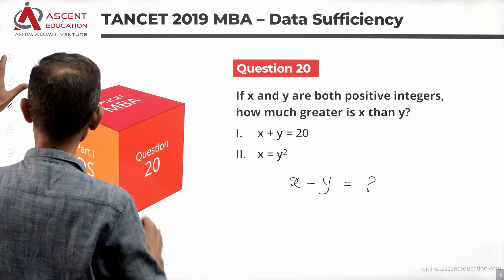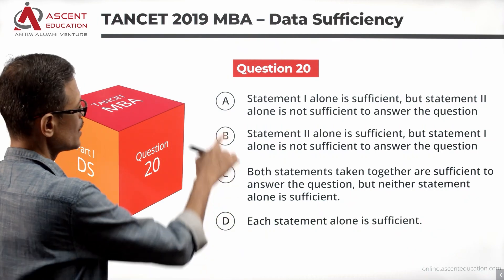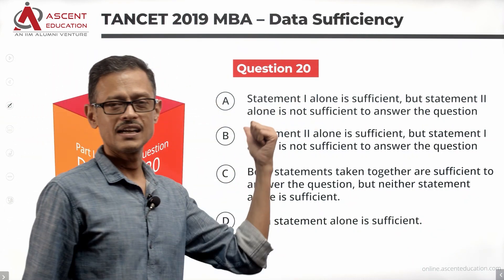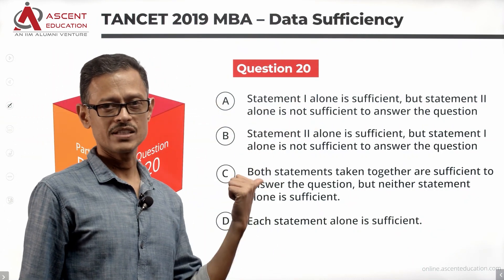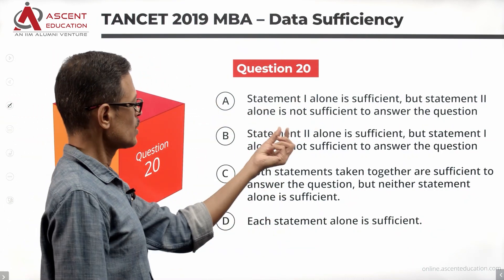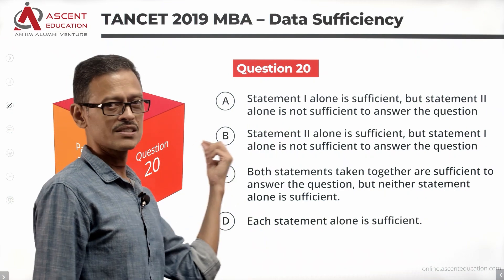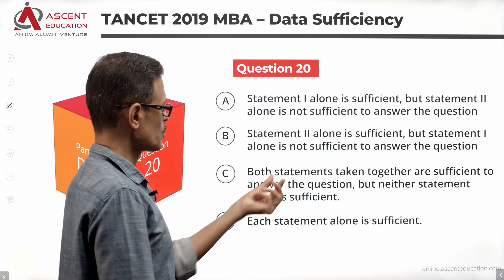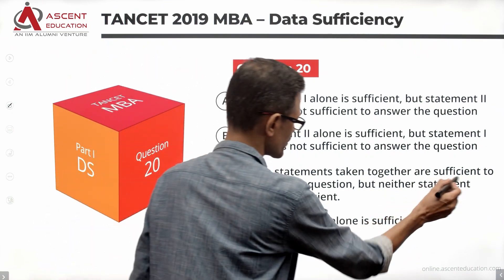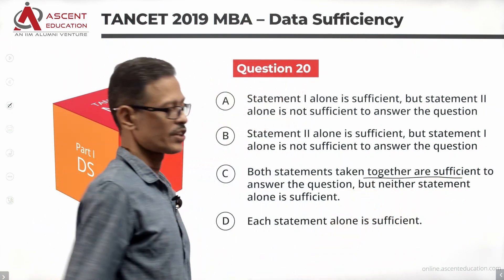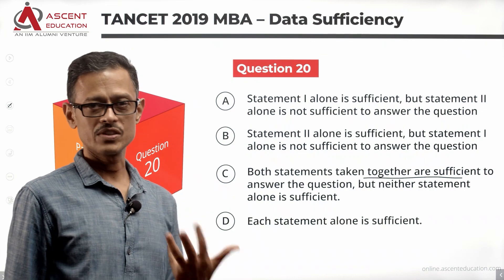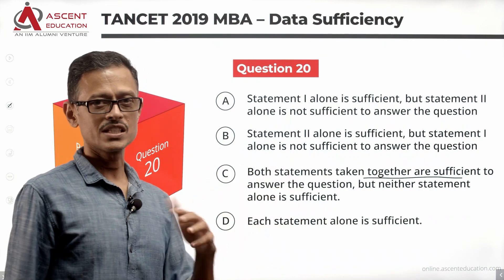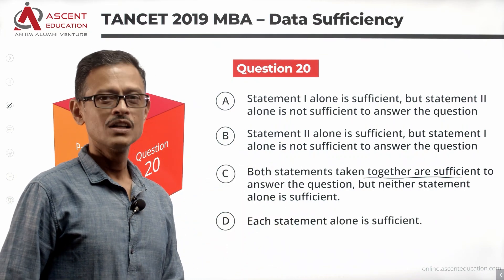Let's look at the four answer options. One alone is sufficient and two is not — Answer option A. Two alone is sufficient and one is not — Answer option B. Together they are sufficient — Answer option C. Each statement alone is sufficient — Answer option D.